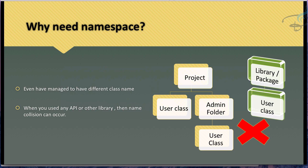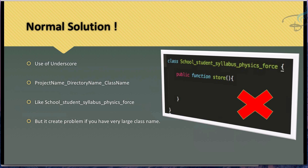The conventional solution is using underscores. You would name a class something like 'School_Student_Syllabus_Physics_Force', meaning the Force class is inside the school folder, then the students subfolder, then the syllabus subfolder, then physics — and this leads to an endless system of creating huge file names. How will you deal with that? Now comes the real solution: namespaces.